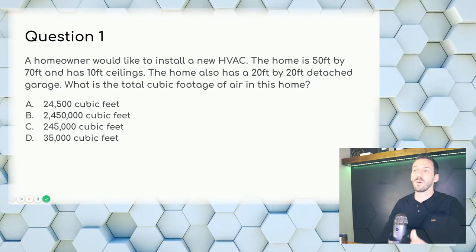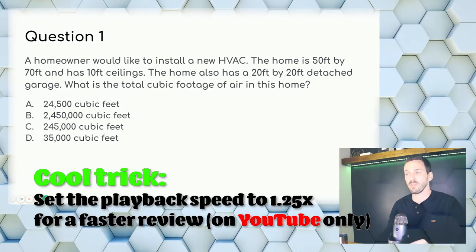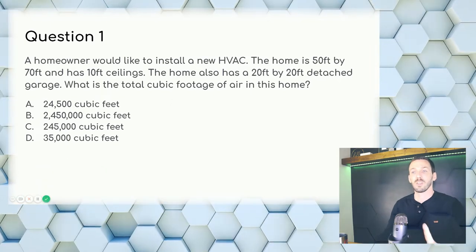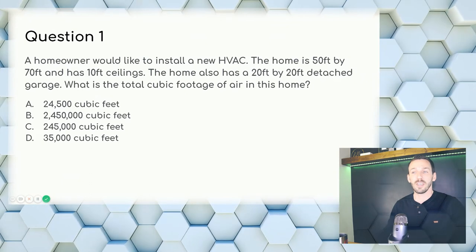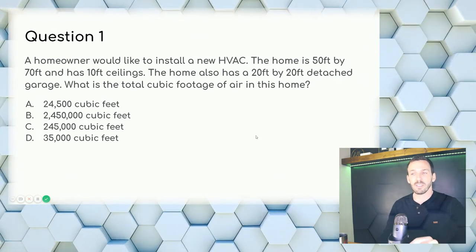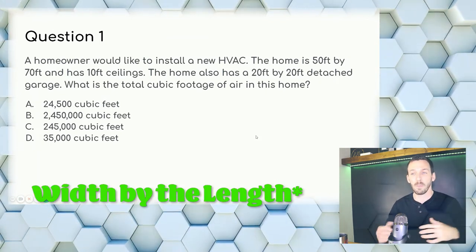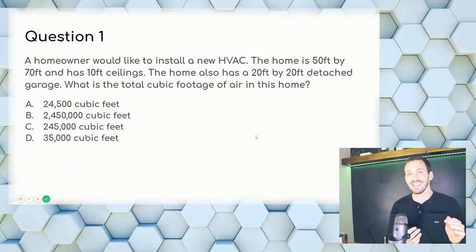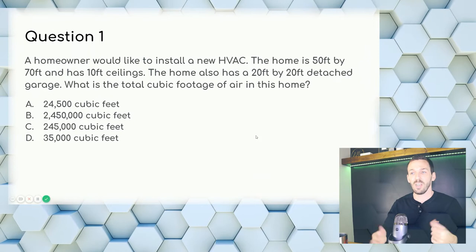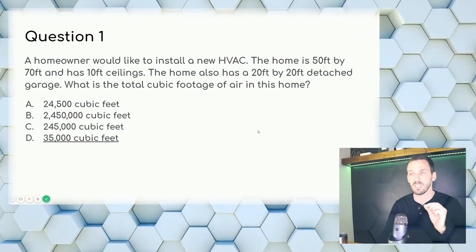Question 1: A homeowner would like to install a new HVAC. The home is 50 ft by 70 ft and has 10-foot ceilings. The home also has a 20 ft by 20 ft detached garage. What is the total cubic footage of air in this home? For cubic feet we multiply all three dimensions: 50 × 70 × 10 = 35,000 cubic feet. The garage doesn't count because we need heated space only. Answer: D, 35,000 cubic feet.